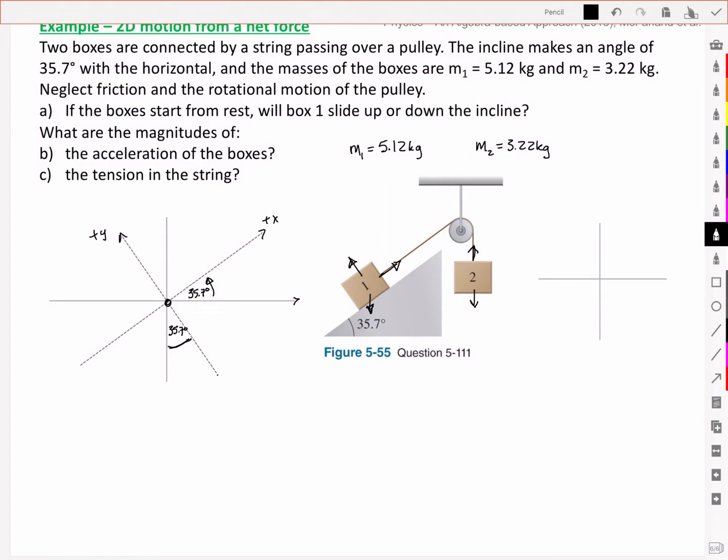For the free body diagram then, let's draw our forces now. We've got a tension acting along the positive x-axis. So this is our tension. We've got a normal force acting perpendicular. That's the normal force. It's perpendicular to the surface, so it's perpendicular there. And we've got gravity acting straight down.